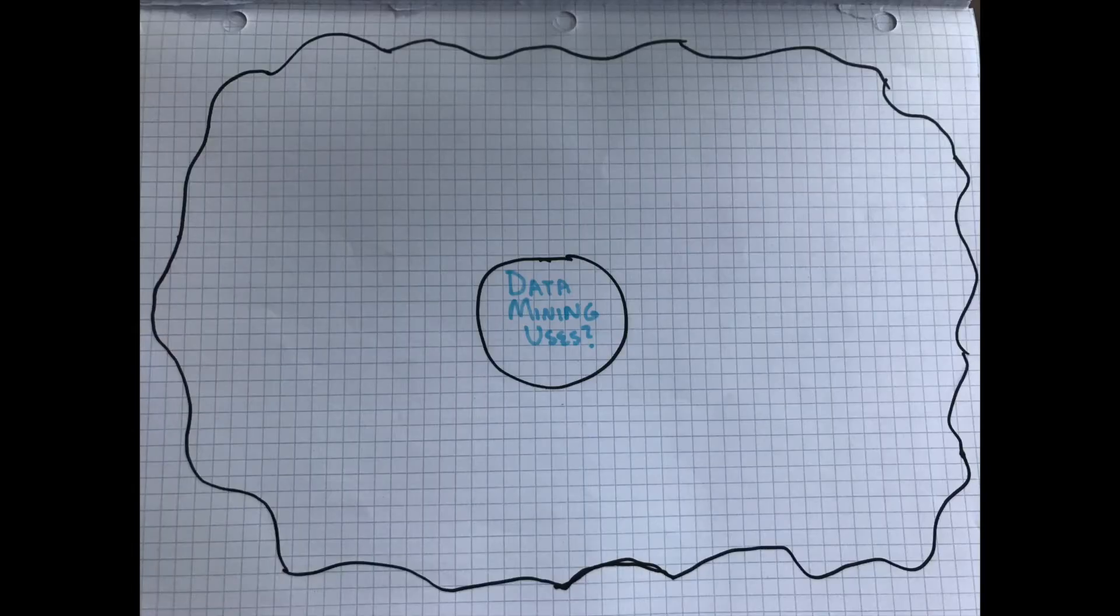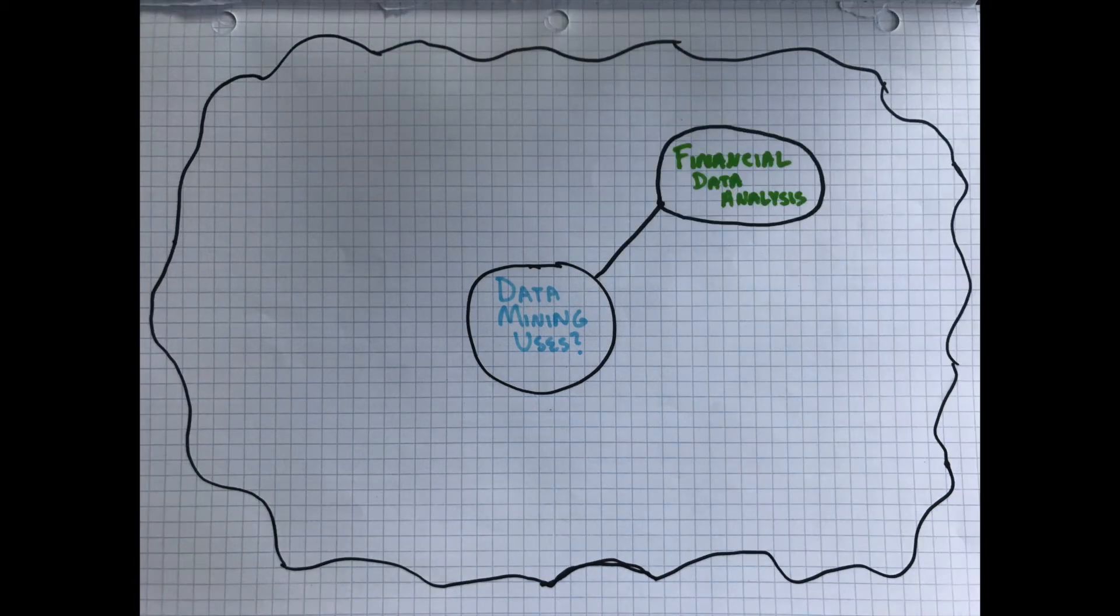With that being known, let's discuss some uses for data mining. One place where data mining is very prominent is in the financial world. The data found in the banking and financial world is usually pretty reliable and very thorough, so it is prime data to be used for data mining. The typical uses for it in this industry include loan payment prediction, customer credit policy analysis, grouping of customers for optimized targeted marketing, and detection of money laundering or other similar crimes.